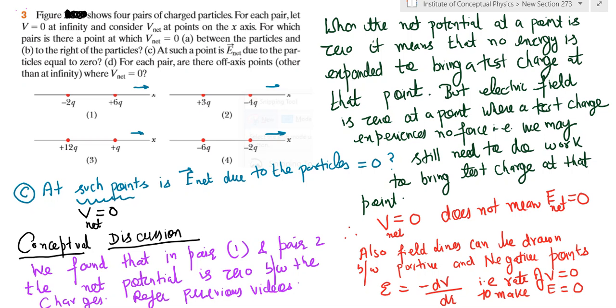All right, welcome to video four of this problem. If you see the point, you know the problem. This numerical says at what point, whenever you found V_net to be zero, and we were able to find that V_net is zero in figure number one and two (you can see the previous videos), will the electric field also be zero at the same points?